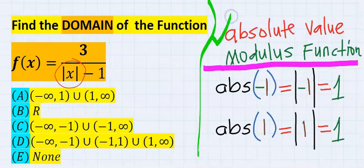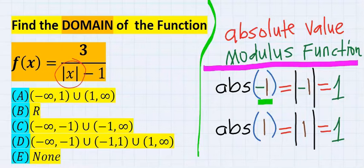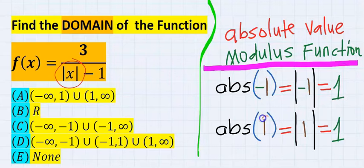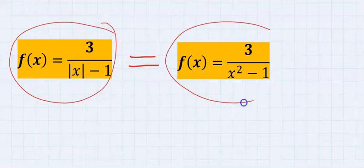Absolute value or modulus removes the negative of a number or variable — it simply rejects negatives. For example, absolute value of minus one, which is the same as modulus of minus one, is going to return a positive. If you give absolute value or modulus a positive number, it will return back the positive number. Subsequently, this question is the same as this.